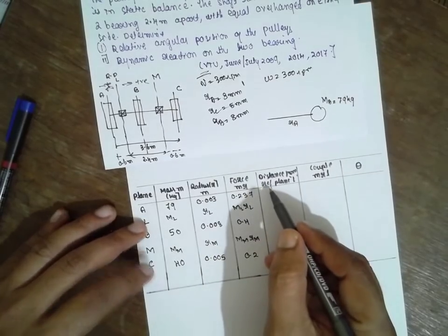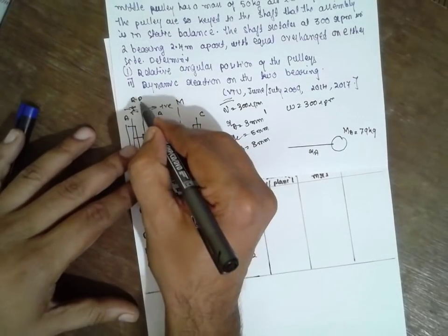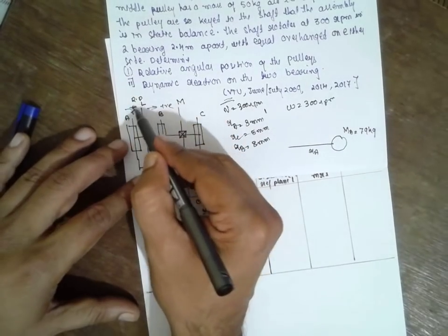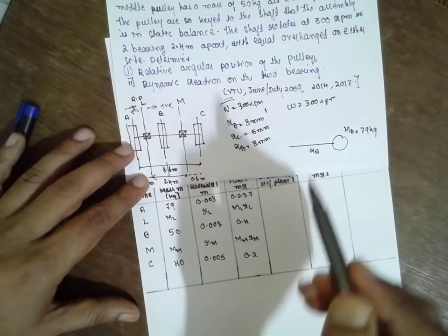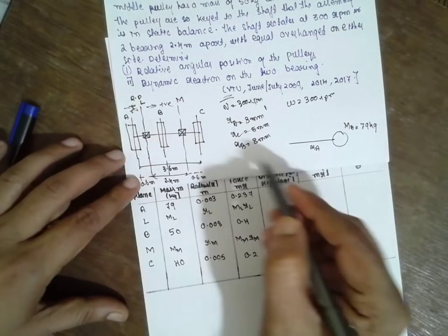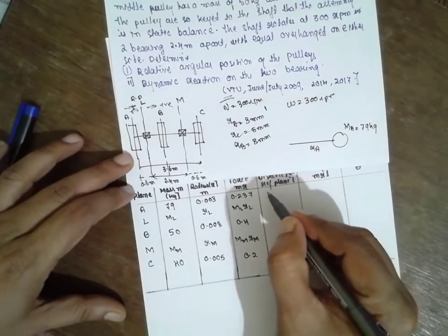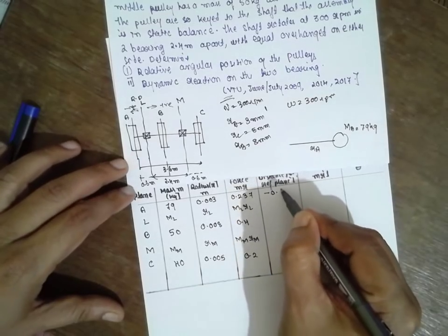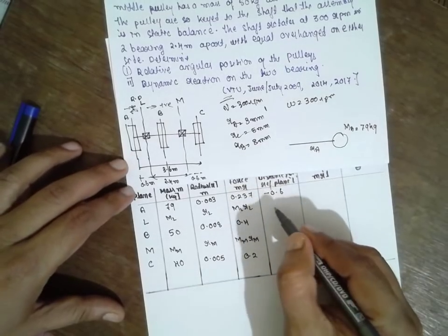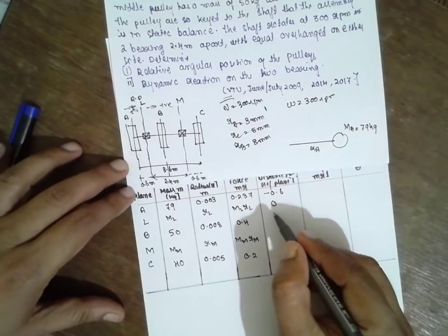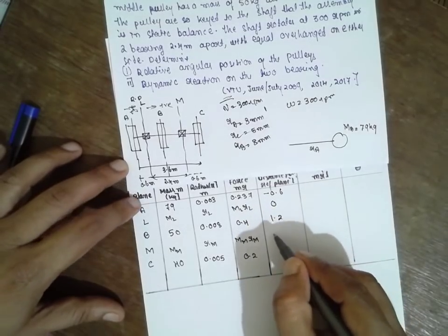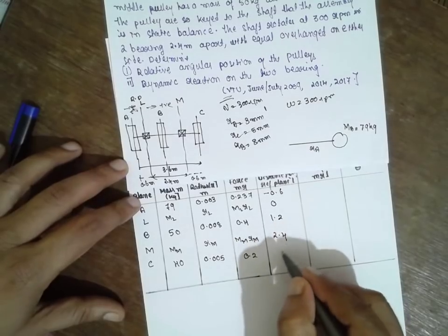Distance - now the reference plane, we have to consider from this one. As per the data, this is the reference plane. This side I will refer as negative and this side as positive. From this side it becomes minus 0.6. Here it becomes 0. Here becomes 1.2, then 2.4, and 3.